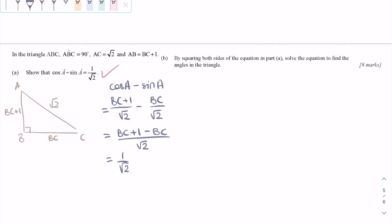In part B, we need to find the other angles in this triangle using the equation from part A. We need to square both sides of the equation, as we're told to do.